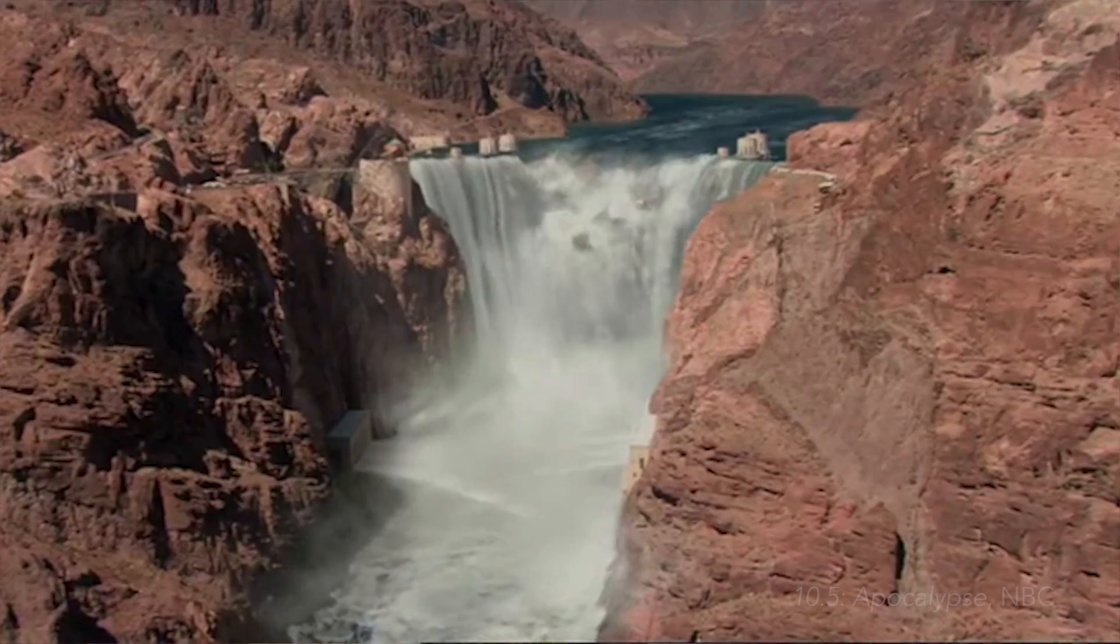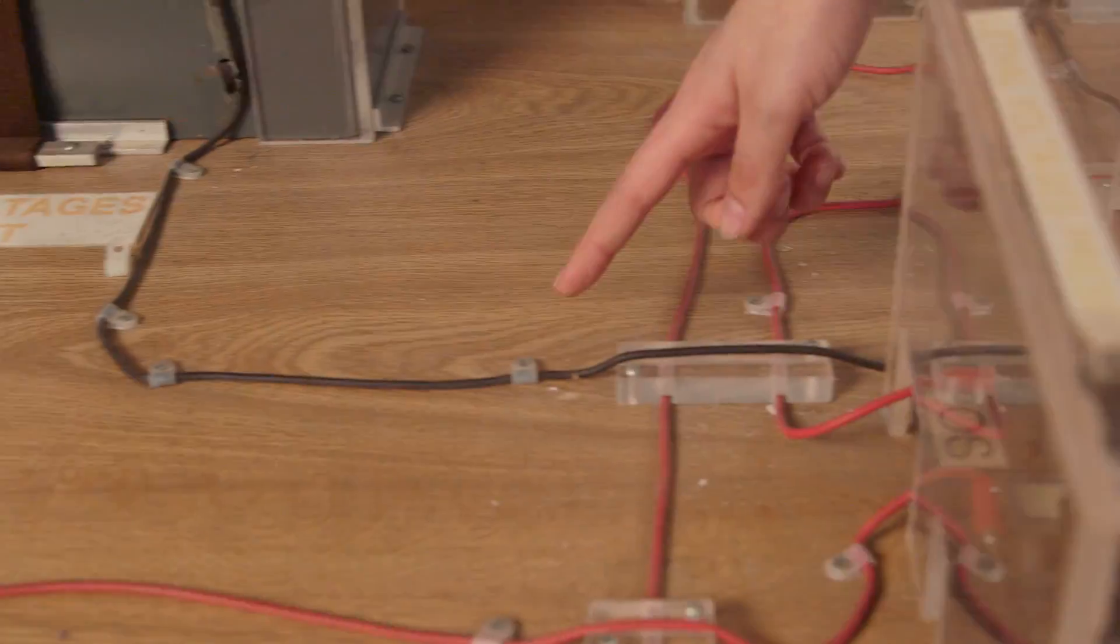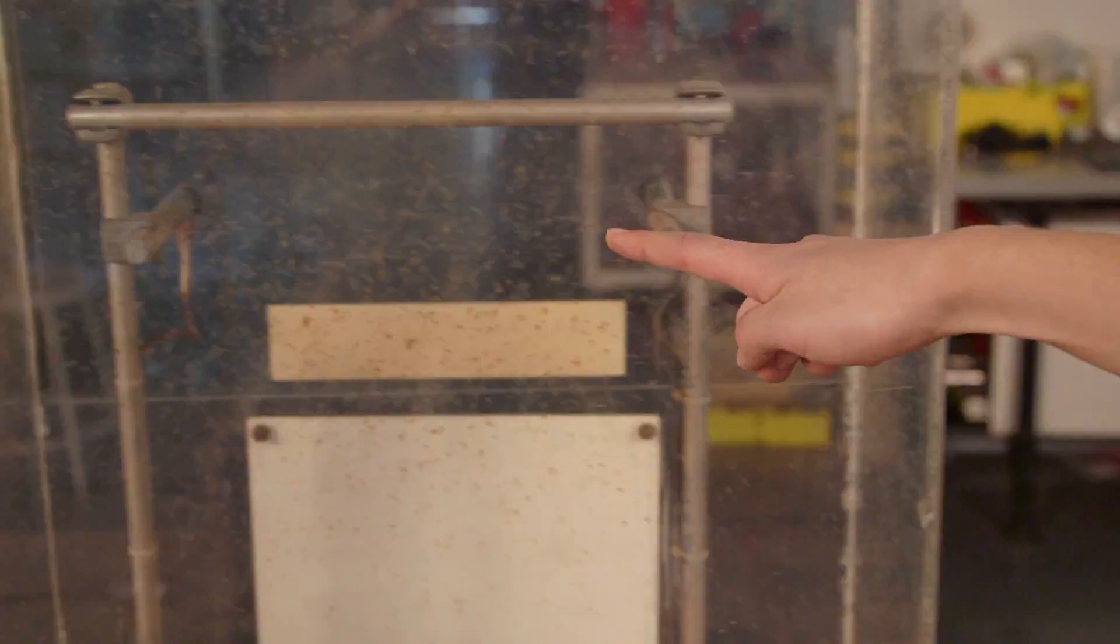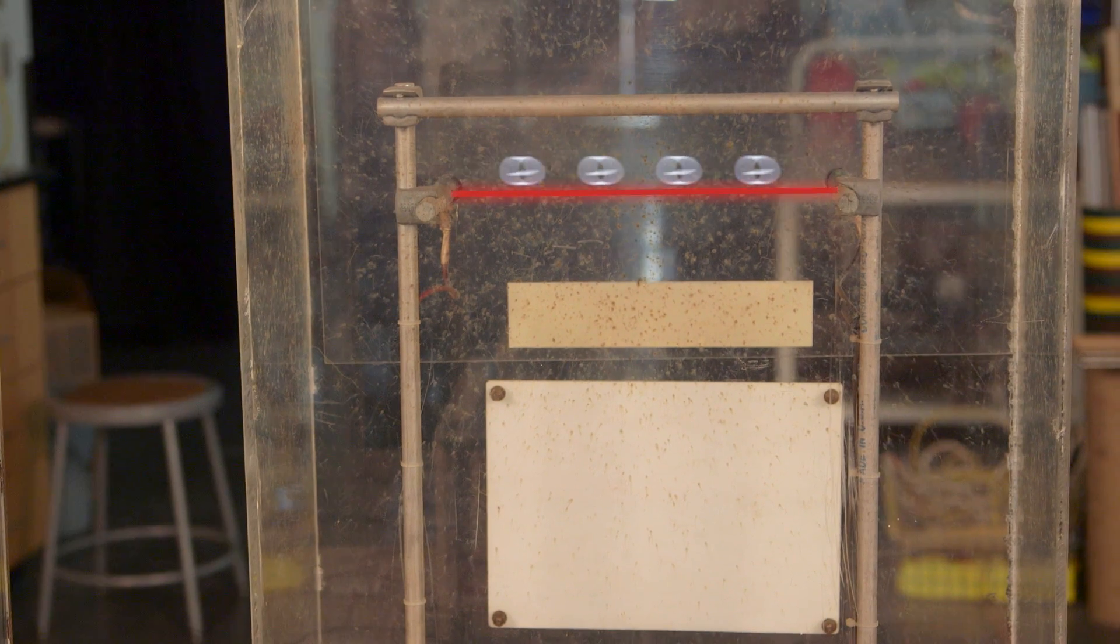Imagine destroying the Hoover Dam. Huge water flow. It's the same thing here. Electrons will rush from the negative plate through the iron wire to the positive plate, and the wire can't handle all that current.